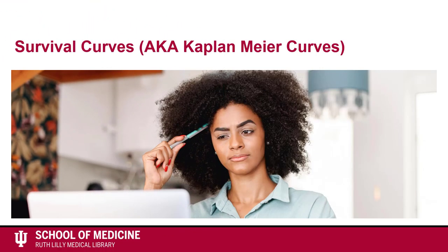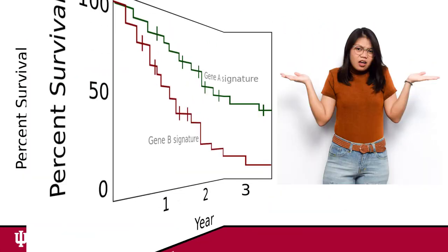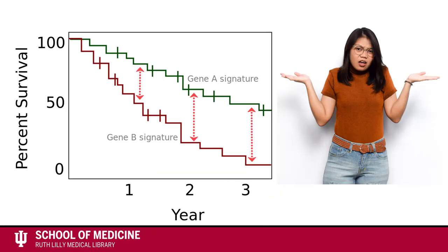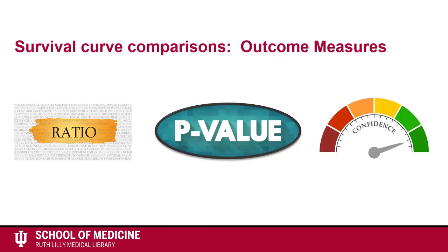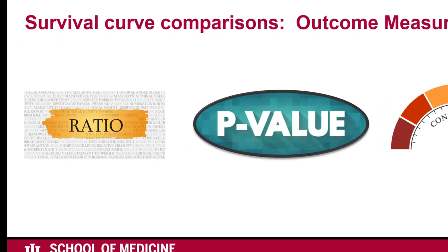Survival curves don't always tell you everything you need to know just by looking at them. Visually, you don't know if the difference between the two curves is statistically significant or precise. When you compare two or more survival curves, you should look for the following outcome measures.